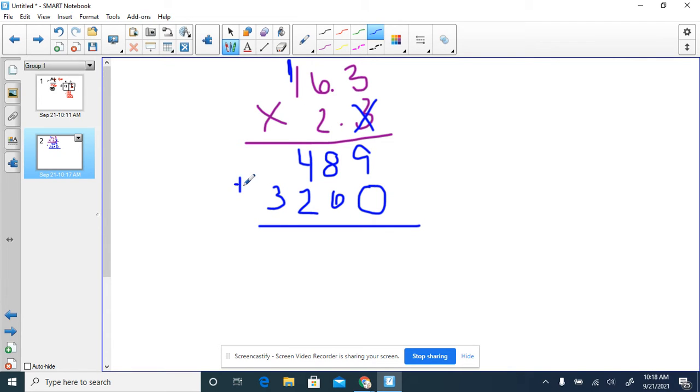From here, we're going to add up our 2 products. 9 plus 0 is 9. 8 and 6 is 14. Carry our 1. 4 and 1 is 7. And bring down our 3.